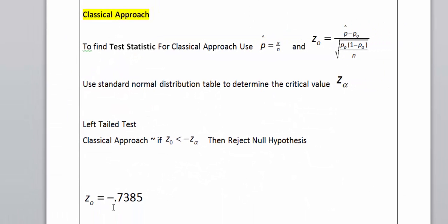So here's my test statistic, z-naught equals negative 0.7385. Now I have to find the critical value and then compare the two values. If my z-naught is less than the critical value, then I'm going to reject the null hypothesis.